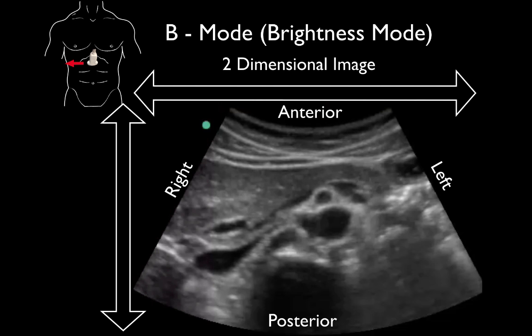B-mode, or brightness mode, refers to the brightness of the grayscales we see on an ultrasound image. As we look at this ultrasound image, there are several grayscale pixels, and that is what brightness mode refers to.